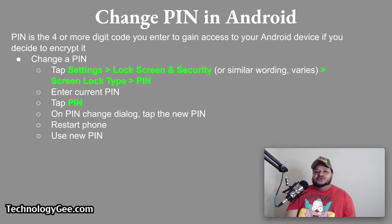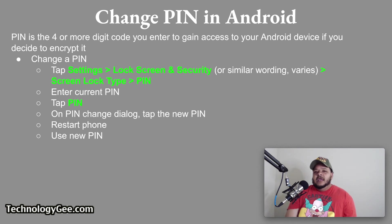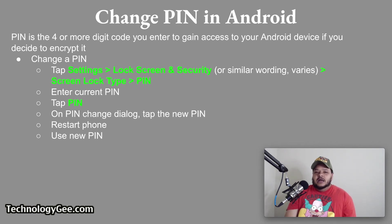To change your PIN in Android, the PIN is the four-digit or more code you enter to access your Android device. To change an existing PIN, tap Settings, navigate to Lock Screen and Security or similar wording, then navigate to Screen Lock Type, then select PIN. Enter your current PIN, then tap PIN again. On the PIN change dialog, tap the new PIN, restart your phone, and enter your new PIN when prompted.